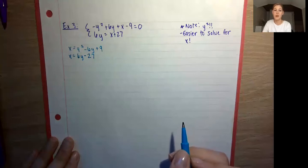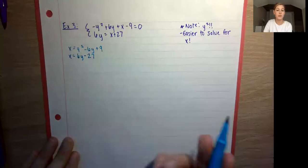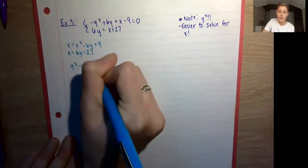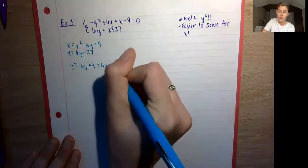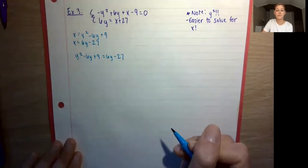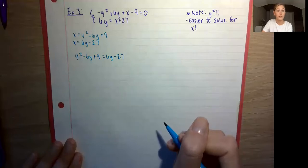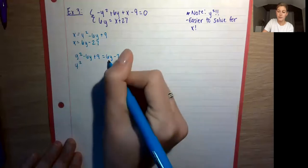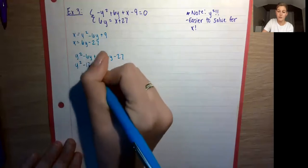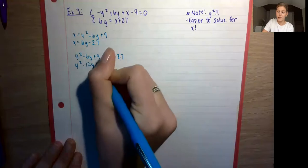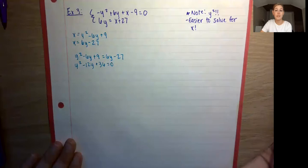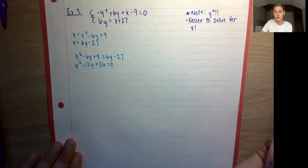Step two: both are equal to x, so set them equal: y² − 6y + 9 = 6y − 27. Getting everything on one side: y² − 12y + 36 = 0. Now we check the discriminant: b² − 4ac = (−12)² − 4(1)(36) = 144 − 144 = 0.